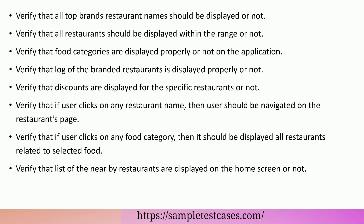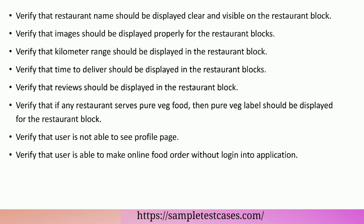Verify that if a user clicks on any food category, it should display all restaurants related to the selected food category. Verify that the list of nearby restaurants is displayed on the home screen. Verify that the restaurant name should be clear and visible on the restaurant block. Verify that images should be displayed properly for the restaurant blocks. Verify that the kilometer range and the time to deliver should be displayed in the restaurant block.